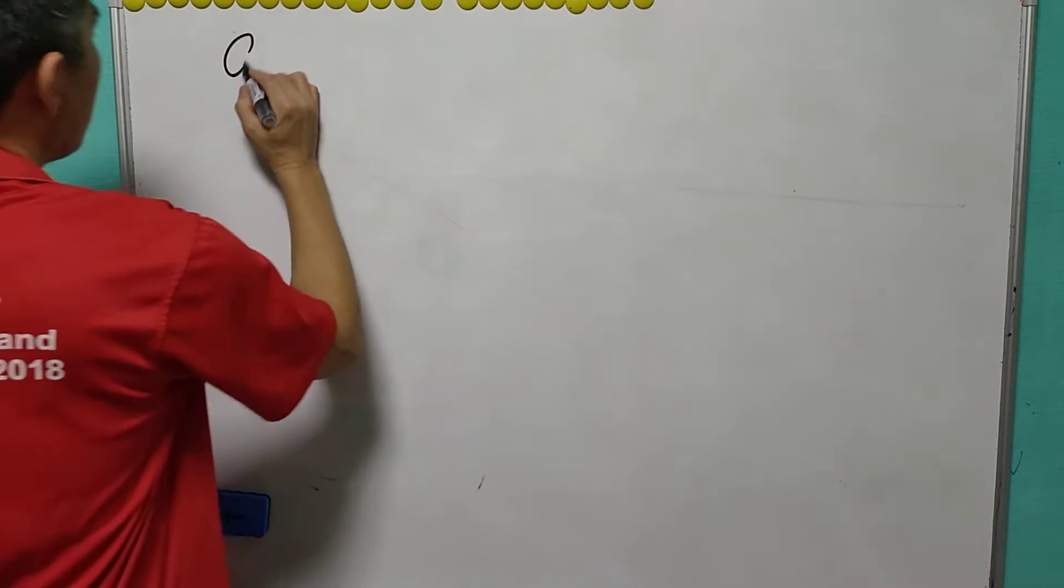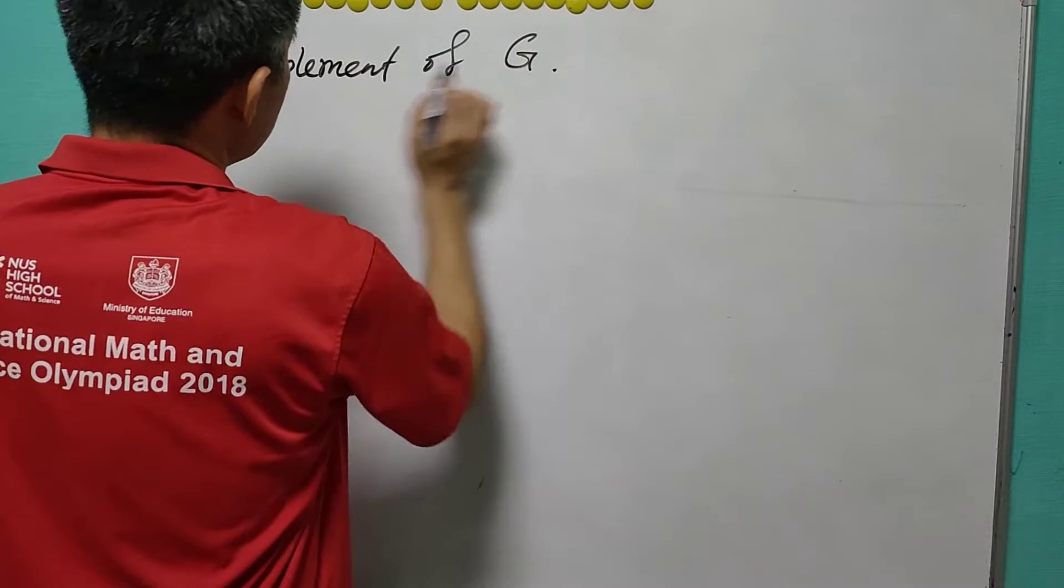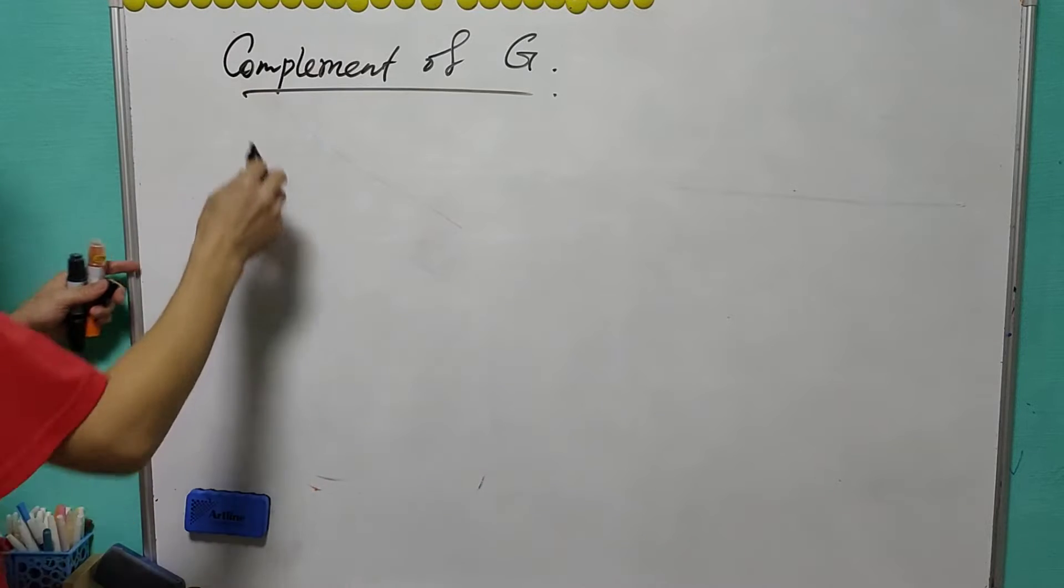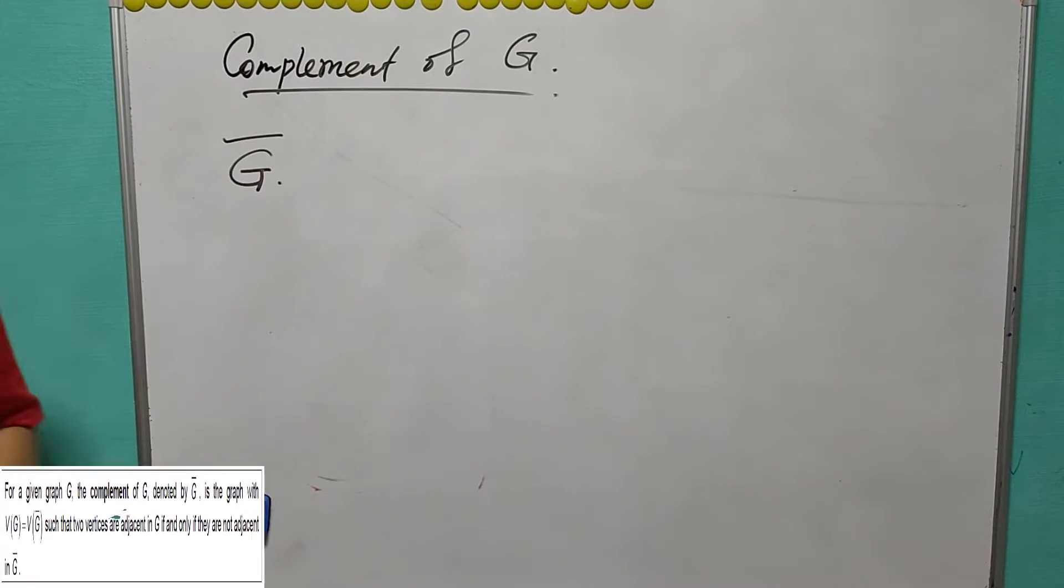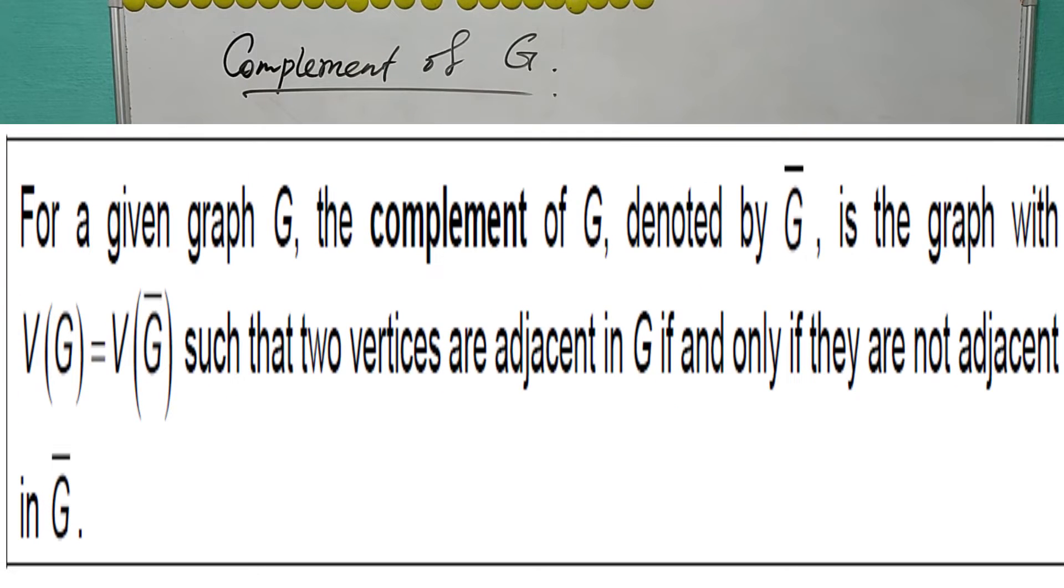The next idea will be on the complement of graph G, written with the notation complement of G. The complement of graph G, denoted by G bar, is a graph with the same vertex set such that two vertices are adjacent in G if and only if they are not adjacent in G bar.